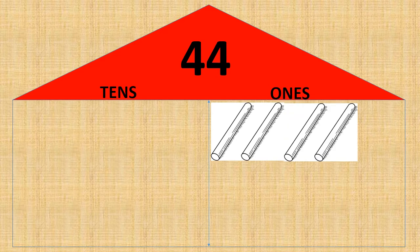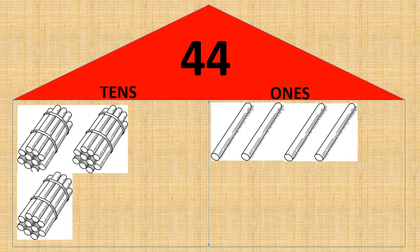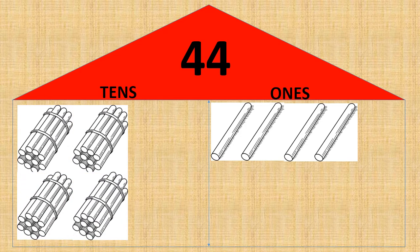Let us try another example. Now in the place value house, the number given to us is forty-four. Let us find out what is missing here. In the tens place, there is nothing. And in the ones place, we see one, two, three, four — four ones. So what is missing? The tens are missing. One, two, three, four — four tens.